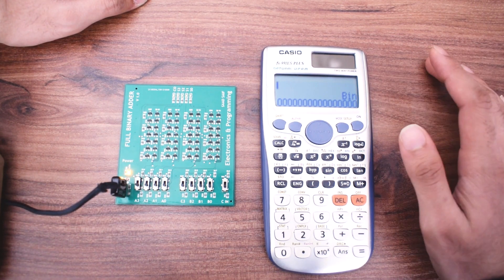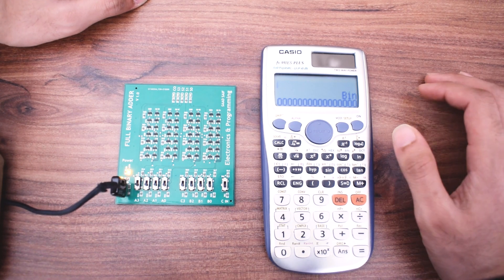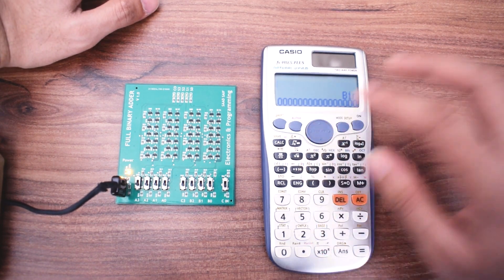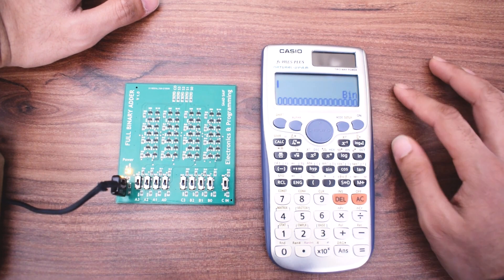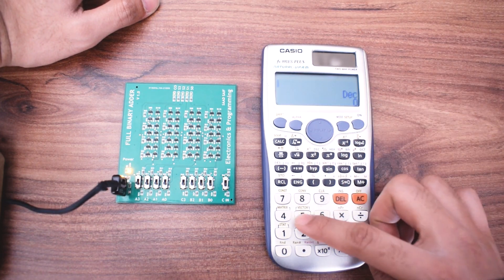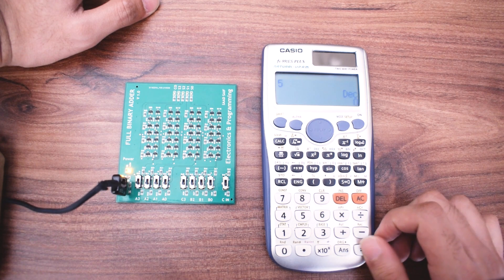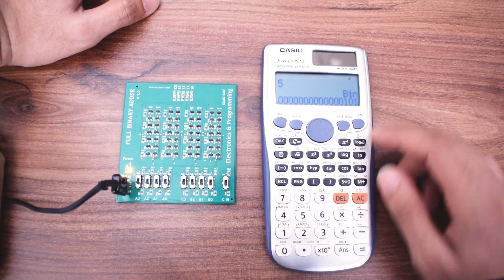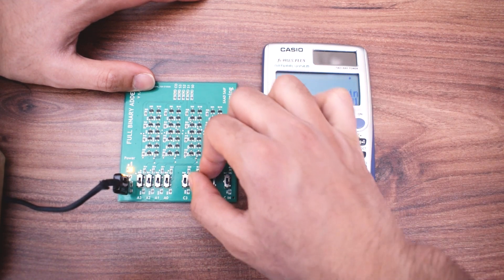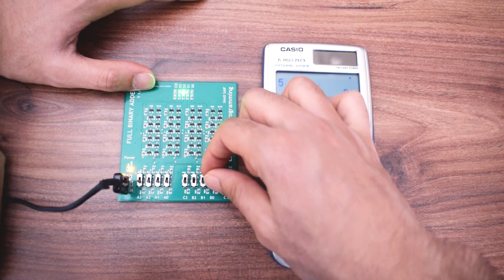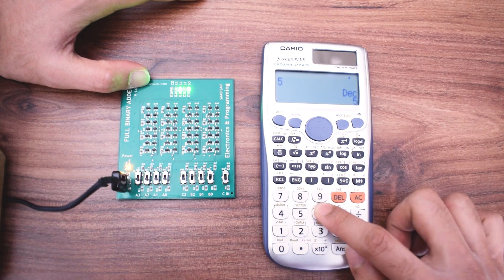So let's for example try to add the number five and six together. I already know the binary representation but I will show you as well. So the binary for five is 1101 and we will put it here on the first input: one, zero, and one. And for six we have